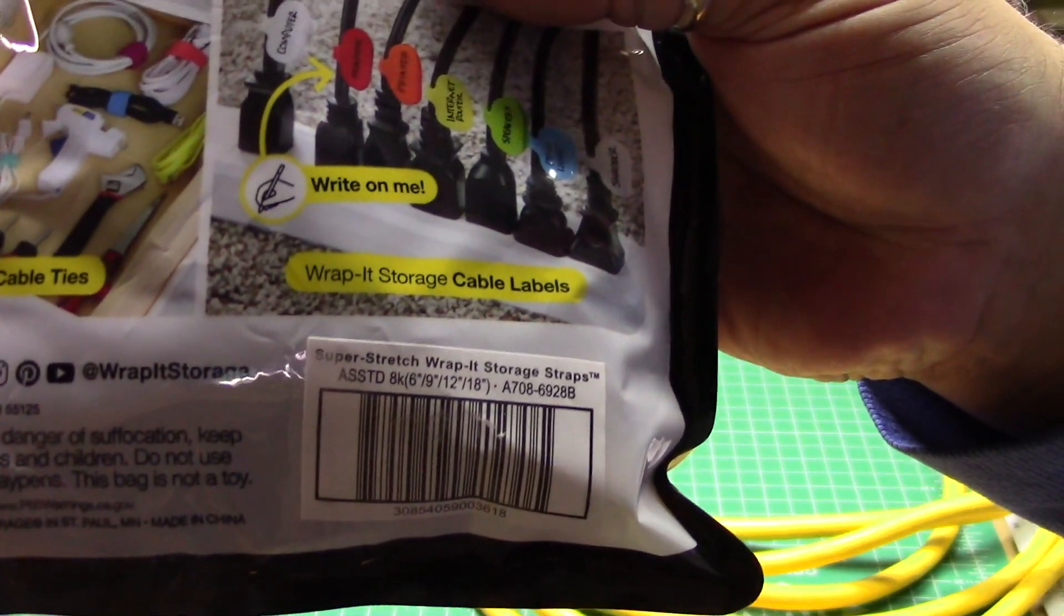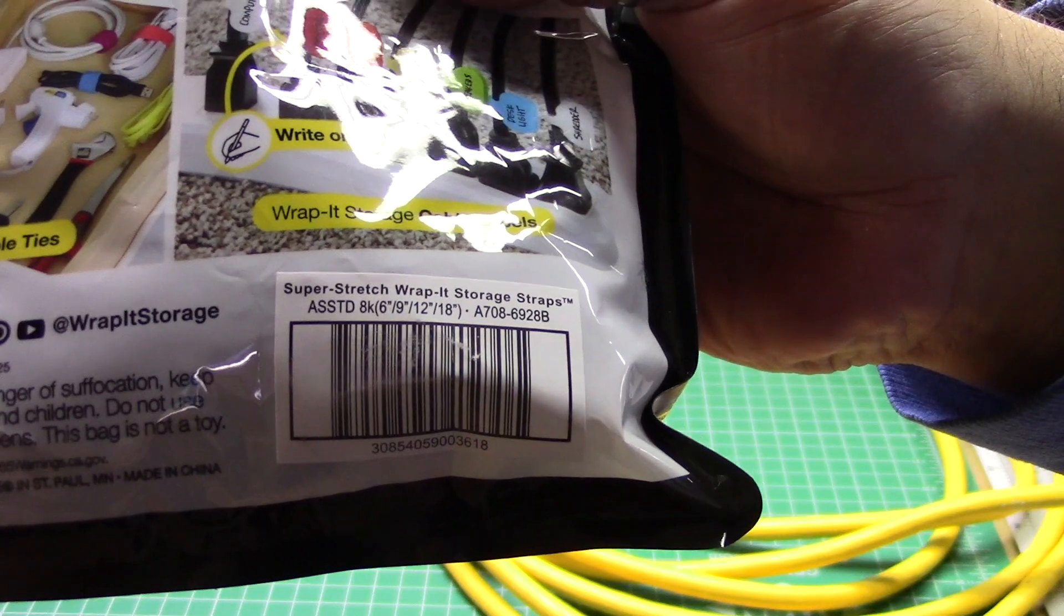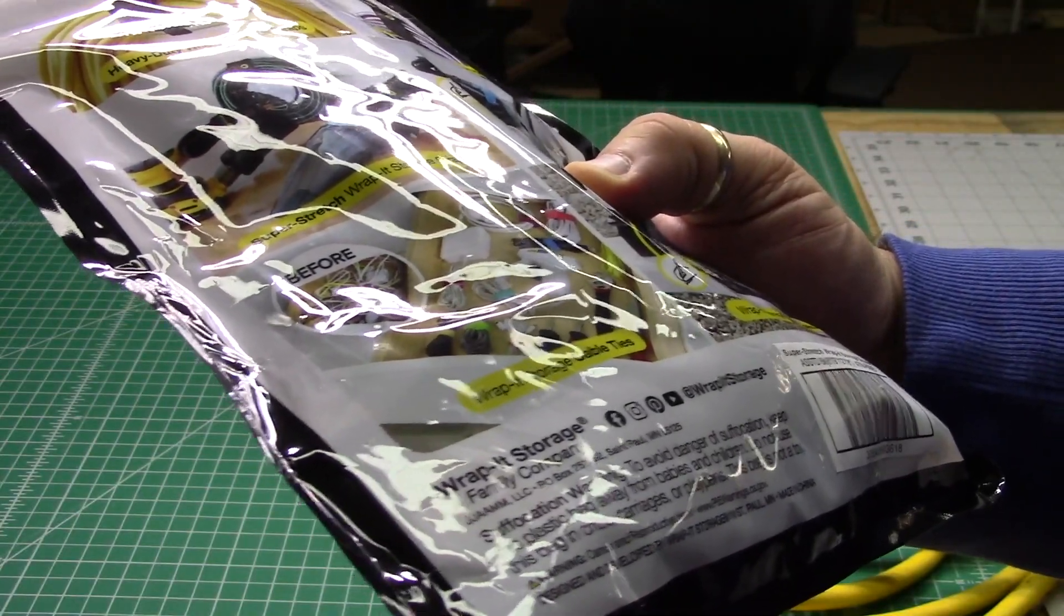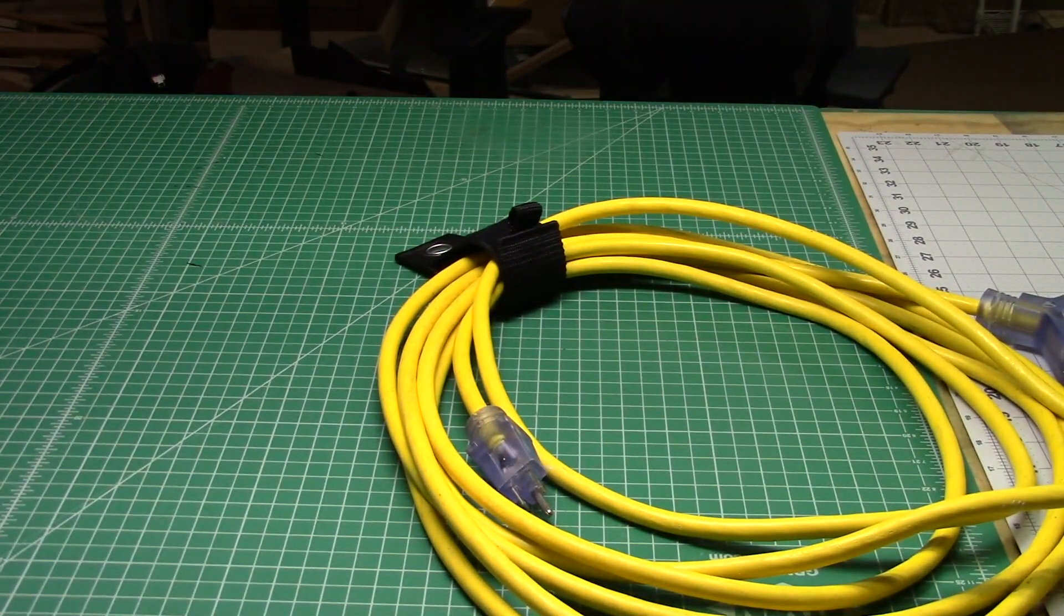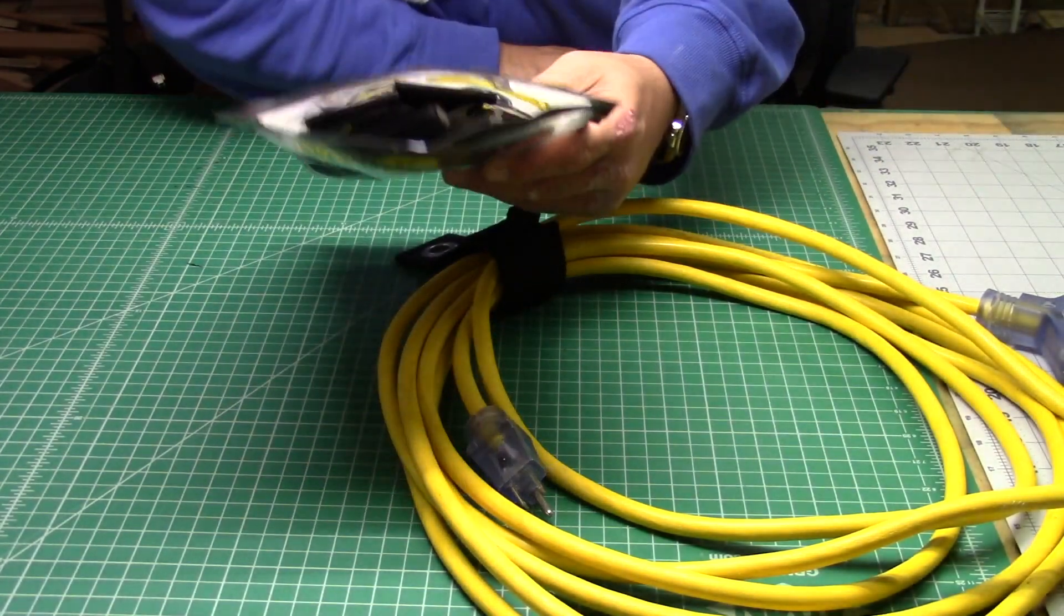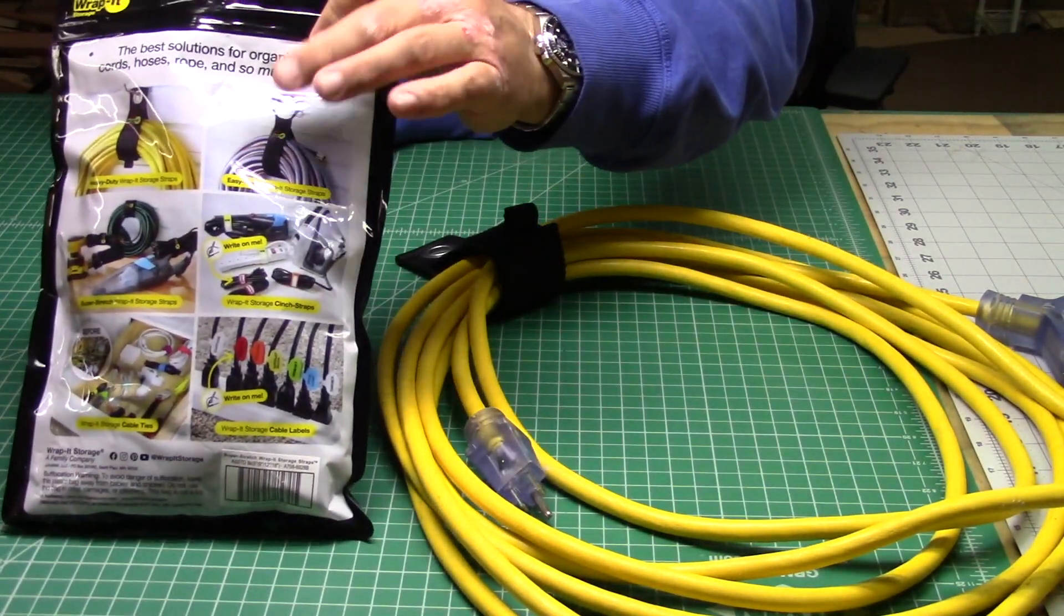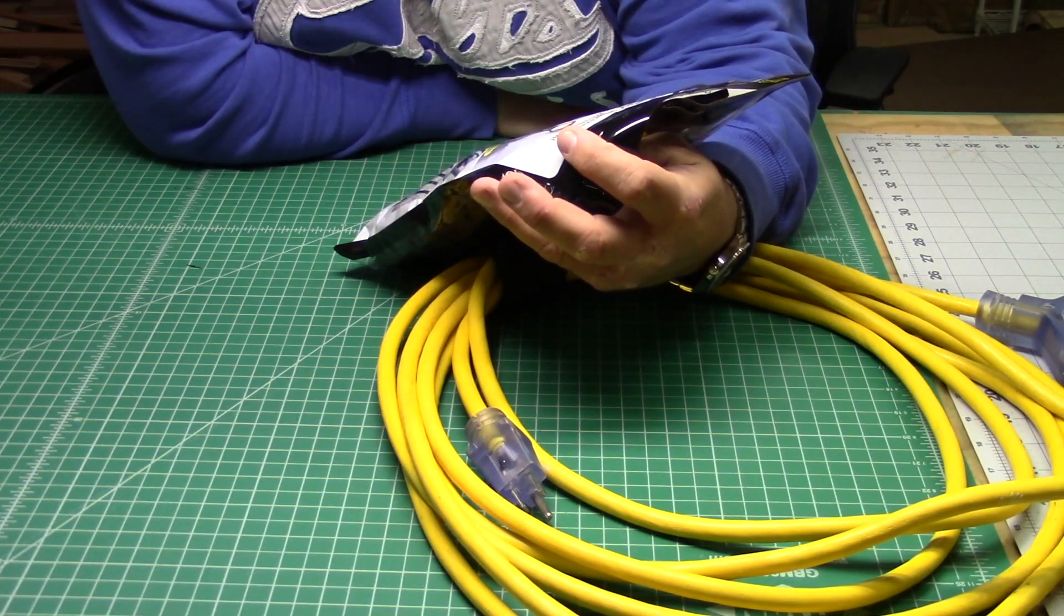There you go, the Super Stretch Rapid Storage Strap - Rapid Store Wrap It Storage. They've got a social media handle to go find it. They've got a different variety of them. Shows on the back here they've got some with a big old handle on them. Those would be nice for garden hose, I do agree.